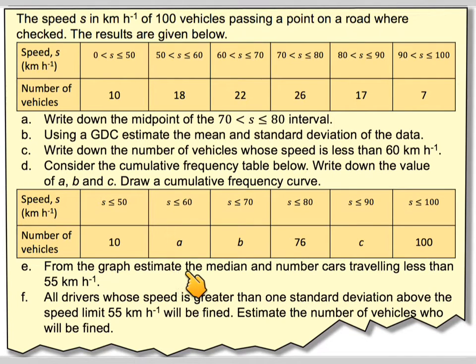From the graph, estimate the median and the number of cars travelling less than 55 kilometres per hour. All drivers whose speed is greater than one standard deviation above the speed limit, 55 kilometres per hour, will be fined. Estimate the number of vehicles who will be fined.